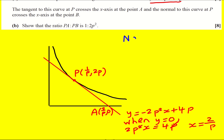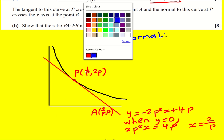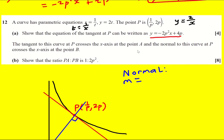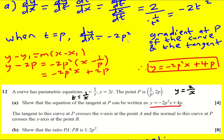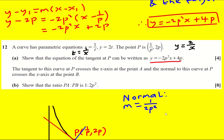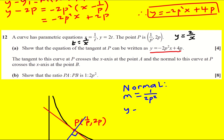Next I need to deal with the normal, which is at right angles to the tangent, and it crosses the x-axis at B. The gradient of the normal is going to be the negative reciprocal of the gradient of the tangent. We had minus 2p squared, so it's going to be 1 over 2p squared. So: y minus 2p equals (1 over 2p squared) times (x minus 1/p), since it goes through the same point.